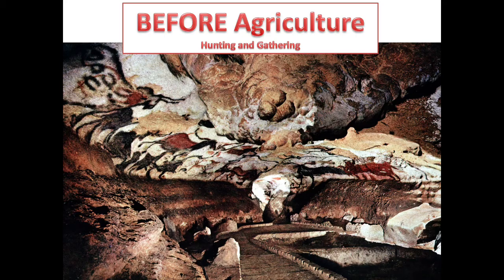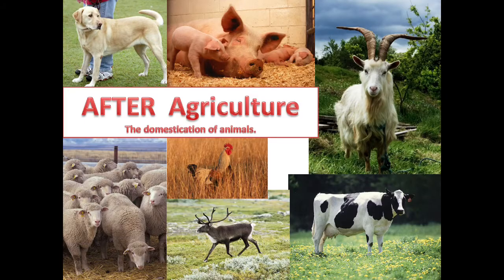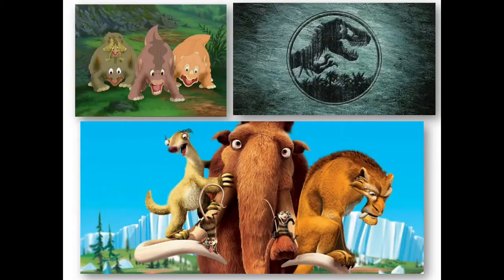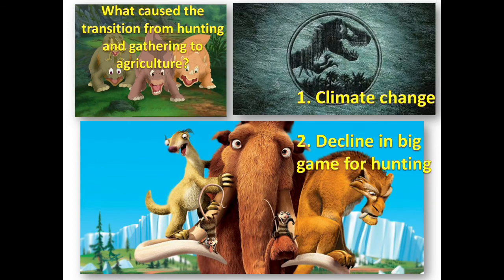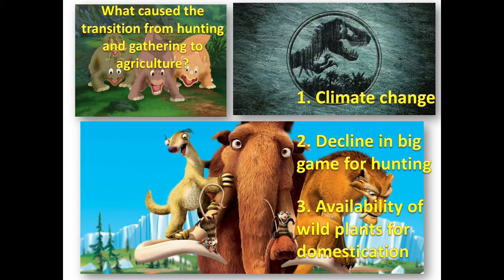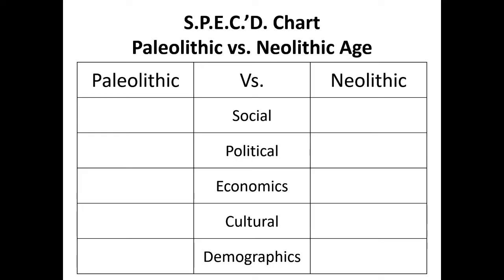Let's contrast before agriculture — hunting and gathering — with after agriculture, which brought the domestication of plants and animals. What caused the transition from hunting and gathering to agriculture? We can chalk it up to climate change, the decline in big game for hunting, and the availability of wild plants for domestication. Now we're going to compare Paleolithic to Neolithic across five dimensions: the social, political, economic, cultural, and demographic aspects — demographics being the study of the movements and patterns of people.